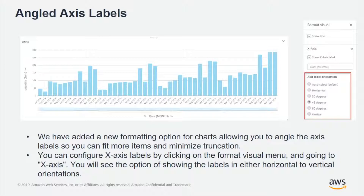You have a lot of customization around the angles that are actually displayed. You can leave it on auto select, you can choose 30, 45, or 60 degrees, or you can go vertical as well. You can also use horizontal, which was the previous behavior.